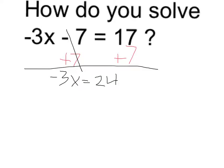Now to undo the multiplication by negative 3, I'm going to divide both sides by negative 3. That division results in 24 divided by negative 3, which equals negative 8.